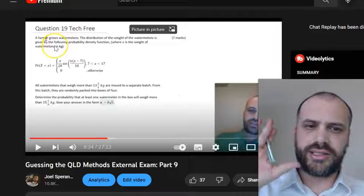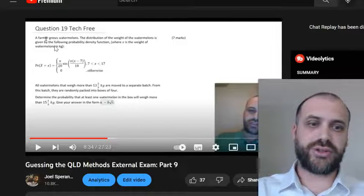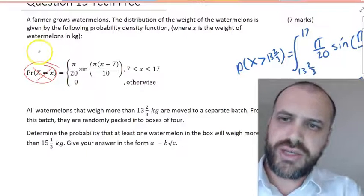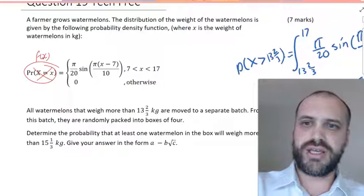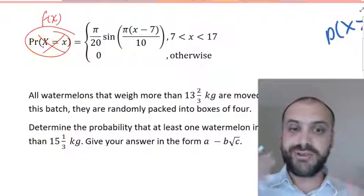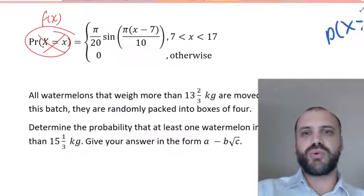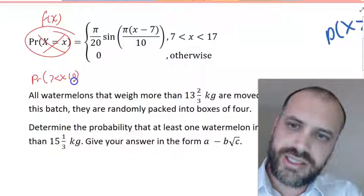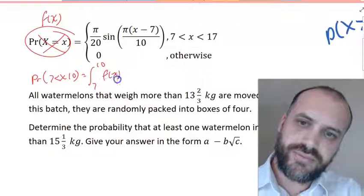The big mistake I've made here is not in my solution. It's in writing the question itself. It's a probability density function. So it's just better to say that the probability density function is just f of x. If we wanted to find some probability, say the probability that the watermelons were between 7 and 10 kilograms, we would say that the probability that the watermelons are between 7 and 10 kilograms is equal to the integral between 7 and 10 of the function with respect to x.